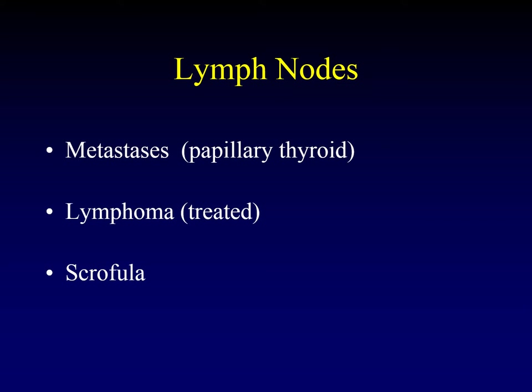Lymphoma tends to be a solid lymph node, but once lymphoma is treated, the nodes may become completely cystic. The third entity that can cause cystic lymph nodes is scrofula — tuberculous adenitis. A tuberculous adenitis in the neck is referred to as scrofula.